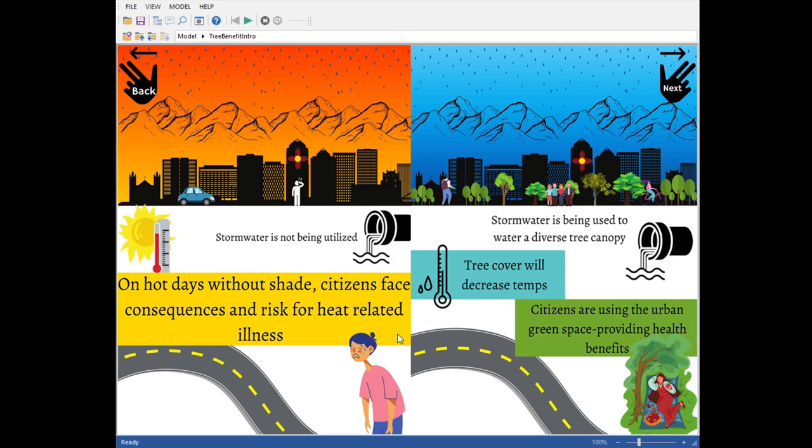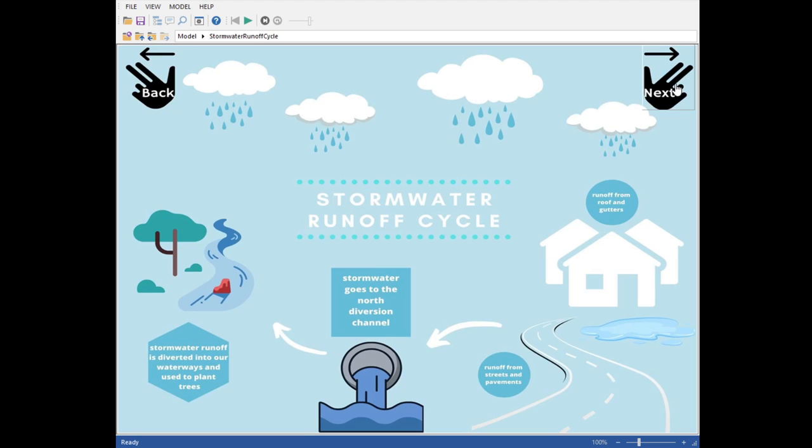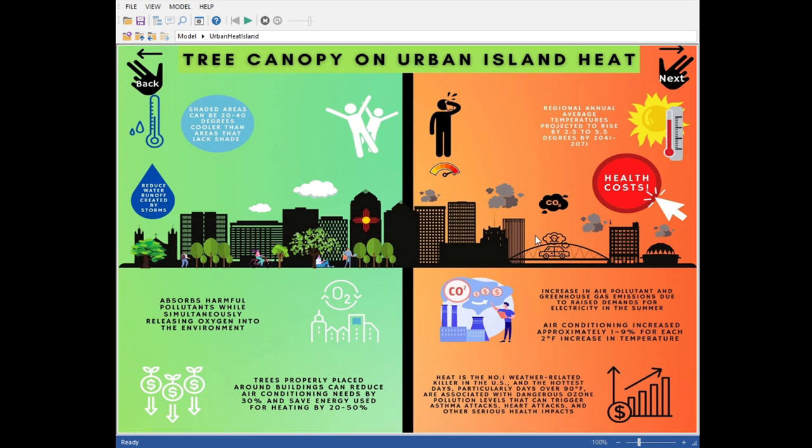This provides some very basic information on the benefits of trees and how we'll water them using stormwater. This provides the basics about the stormwater system we'll be using, primarily centered around the North Aversion Channel, which drains a good portion of the acreage of Albuquerque. This gives more information on the urban heat island effect and how trees help cool down the ambient temperatures in urban areas.